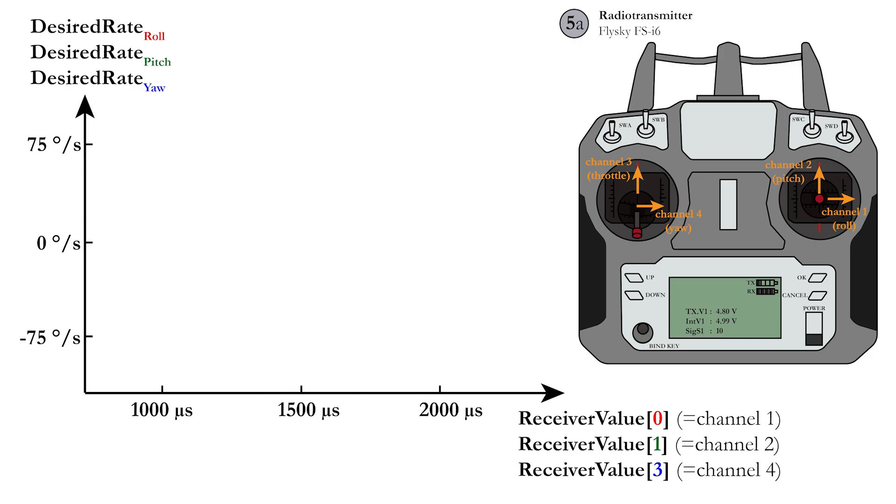This has to be done for the desired roll rate, which is given by channel 1, the pitch rate, which is given by channel 2, and the yaw rate, which is given by channel 4. You can choose your maximal and minimal desired rotation rate. The higher the values, the more agile your drone will be, but also the harder to control.